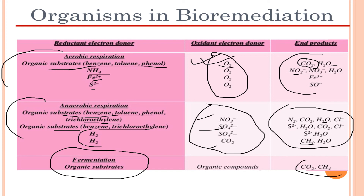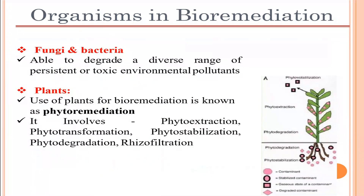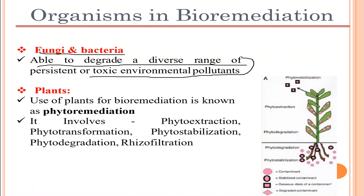Fungi and bacteria are able to degrade a diverse range of persistent or toxic environmental pollutants. Plants are also used for bioremediation, which is known as phytoremediation. It involves processes such as phytoextraction, phytotransformation, phytostabilization, phytodegradation, and rhizofiltration. These are the important organisms involved in bioremediation. That wraps up this video — stay tuned and thank you for watching.